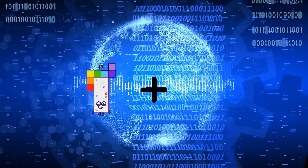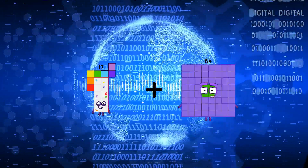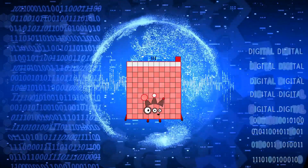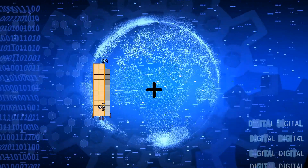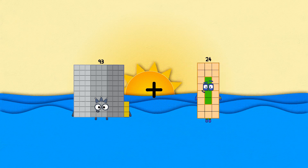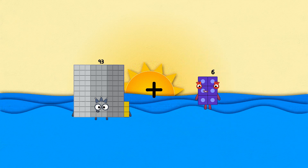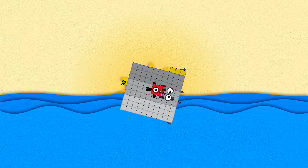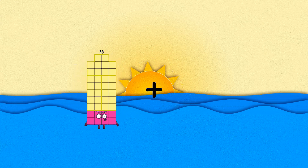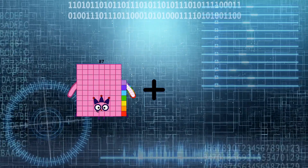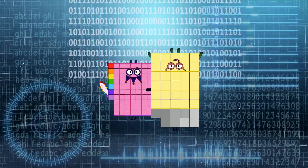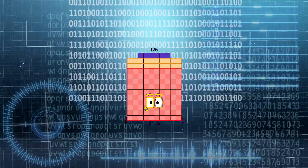17 plus 94 equals 93. 93 plus 1 equals 94. 87 plus 39 equals 126.